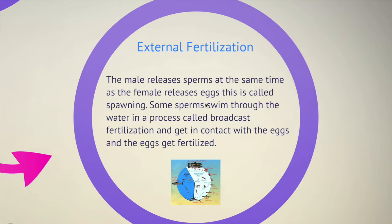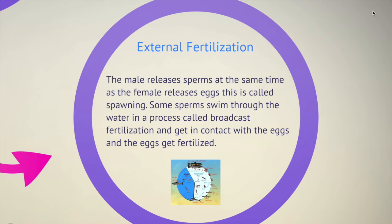Now let's move to external fertilization. In external fertilization, the male releases sperm at the same time as the female releases the eggs. It is not strictly the exact same time every time — there can be some variation — but it must be a similar time because the cells can otherwise be destroyed. Some sperm swim through the water in a process called broadcast fertilization and get into contact with the eggs to fertilize them, outside the mother's body. The best example is the frog.